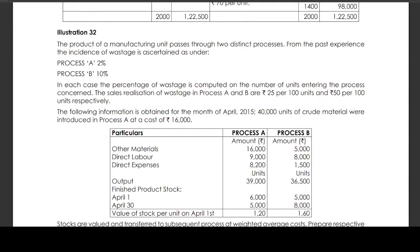The following information is obtained for the month of April 2015: 40,000 units of crude material were introduced in Process A at a cost of 16,000 rupees. Other material: Process A 16,000 rupees, Process B 5,000 rupees. Direct labor: Process A 9,000, Process B 8,000. Direct expenses: Process A 8,200, Process B 1,500. Output units: Process A 39,000 units, Process B 36,500 units.